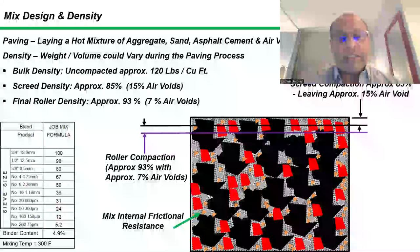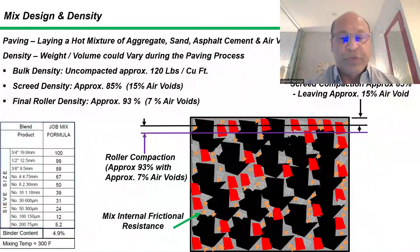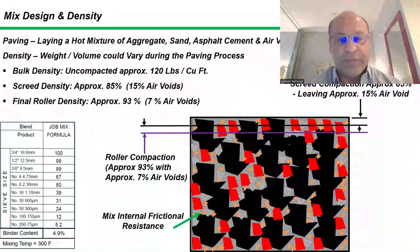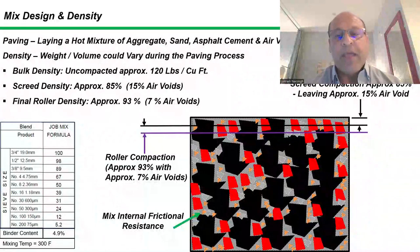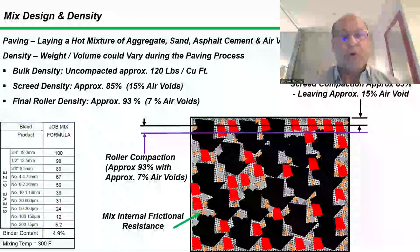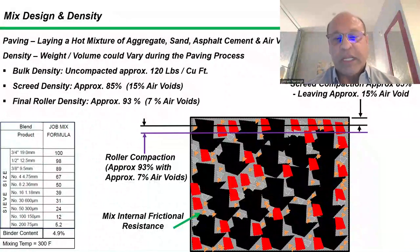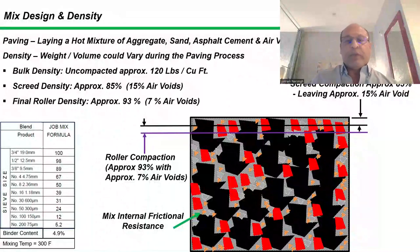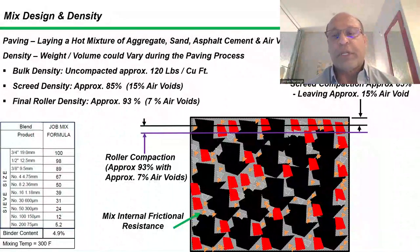That mix design drives what we refer to as the mix internal frictional resistance. So if at any time that job mix formula changes for whatever reason, that mix internal frictional resistance will change. And that will impact screed compaction, and it would also impact the roller compaction. That would change if we segregate the material.